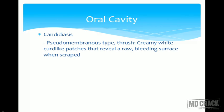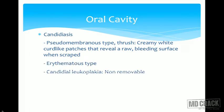Candidiasis is of three types. First is the pseudomembranous type, commonly known as thrush. In this, creamy white curd-like patches reveal a raw bleeding surface when scraped. This can be asked as an MCQ: what are the diseases in which patches when removed bleed? One of them is candidiasis.